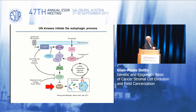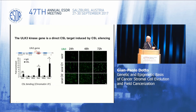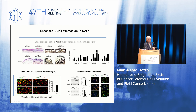A key regulator of autophagy are kinases of the ULK family — ULK1, 2, and 3. We found that the ULK3 kinase gene is a direct target of CSL. Chromatin immunoprecipitation shows CSL binds to specific regions of the ULK3 gene, and silencing the repressor results in upregulation of this nuclear kinase. This increased ULK3 expression is not limited to in vitro: by laser capture microdissection, we can find increased ULK3 expression in fibroblasts underneath actinic keratosis lesions, and also in cultured CAFs compared to normal skin fibroblasts from the same patient.